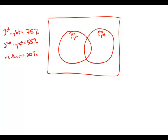If 75% of a class answered the first question on a test correctly, 55% answered the second question correctly, and 20% answered neither of the questions correctly, what percent answered both correctly?